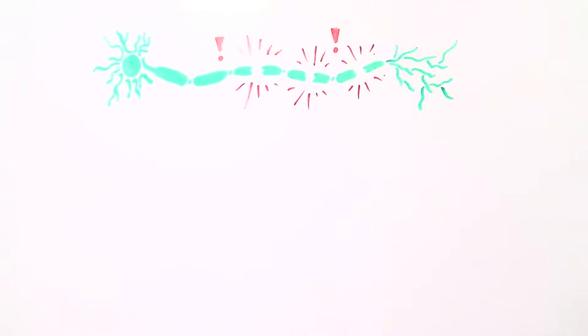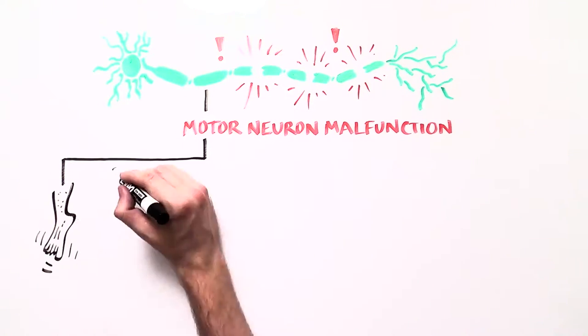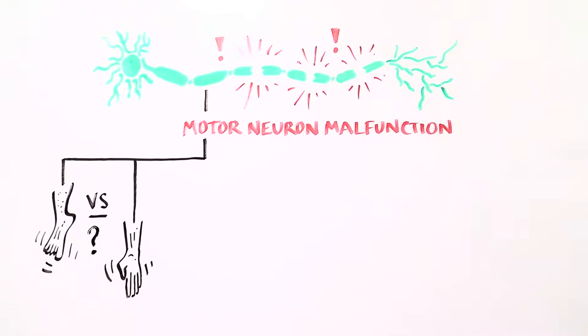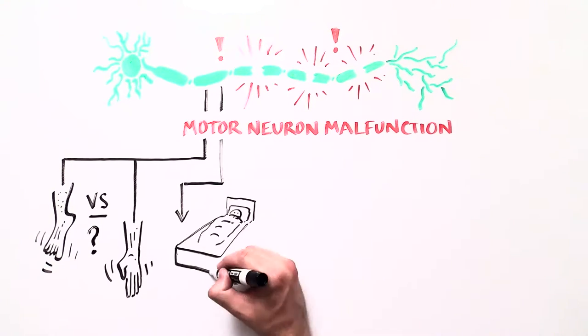If motor neurons are not functioning properly, our foot might move instead of our hands, or we may not be able to move at all.